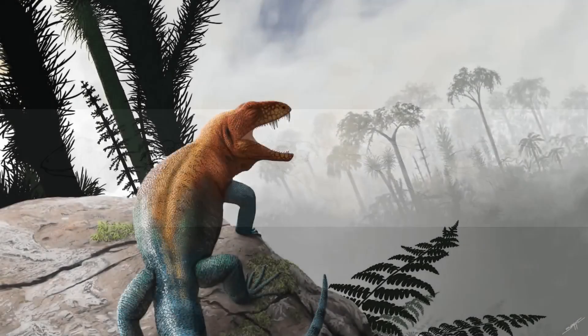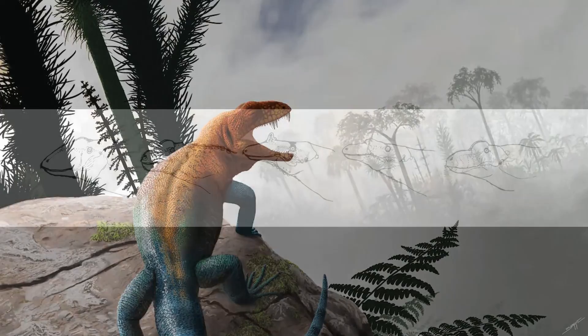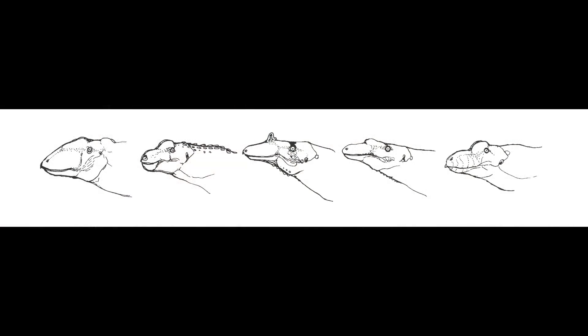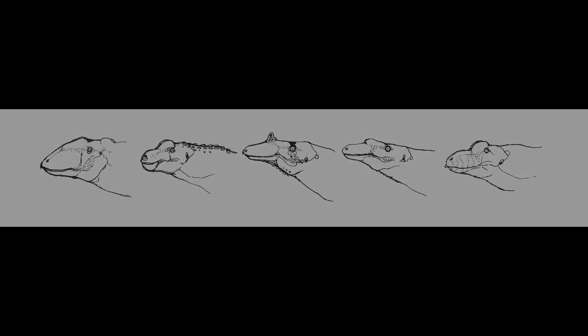This is where the parareptiles come in, as Kozman decided to use this clade as an example — an experiment exaggerating certain anatomical features while keeping other aspects accurate — and what results is a strange group of reptiles that could only come from the mind of Kozman himself. Let's take a look at them.